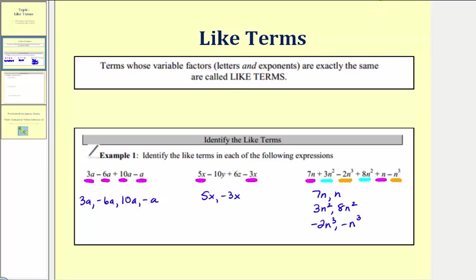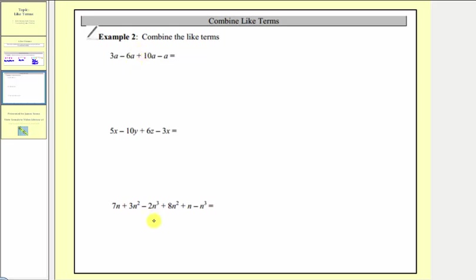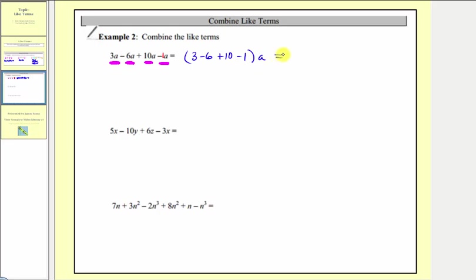Now that we can identify like terms, we'll look at the same three expressions again and combine the like terms. To combine like terms, we add or subtract the coefficients and the variable factor remains the same. For the first expression, all four terms are like terms. Writing the last term as minus 1a, when we combine these four like terms the variable stays as a, and the coefficient is 3 minus 6 plus 10 minus 1, which equals 6. So these four like terms combine to give 6a.